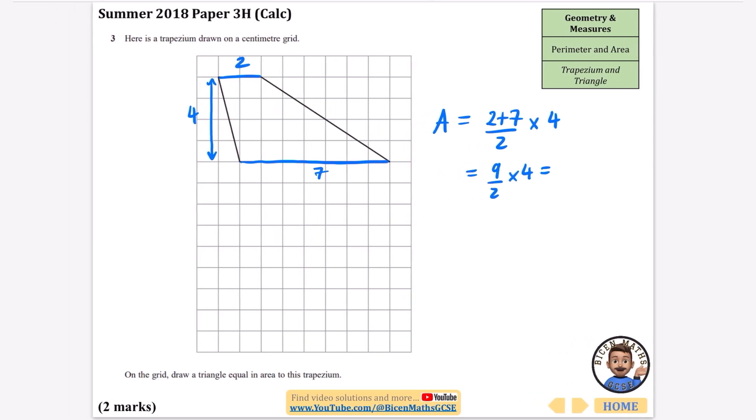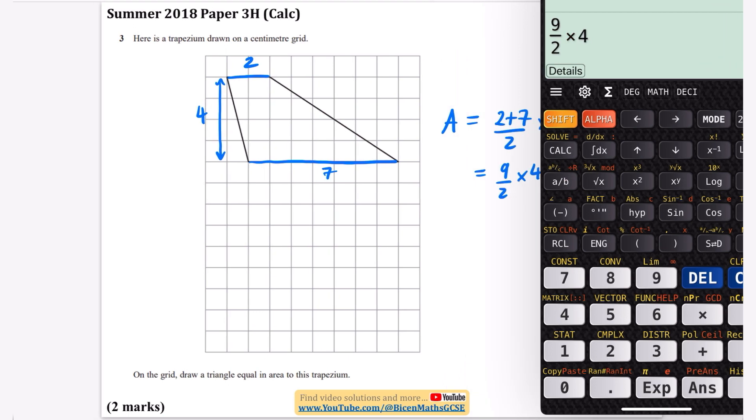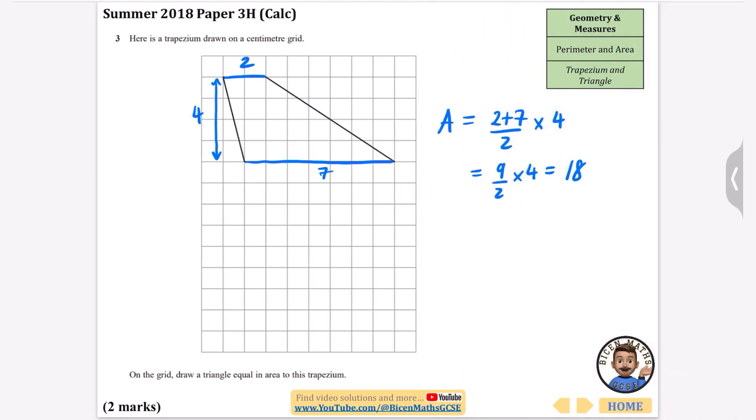2 plus 7 is 9, divided by 2 times 4. I'll put this in the calculator: 9 divided by 2 times 4 is 18. So the area is 18 centimeters squared. On the grid draw a triangle equal in area to this trapezium.